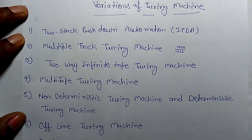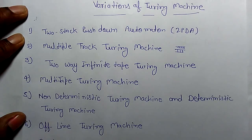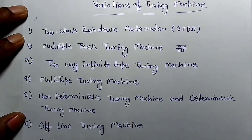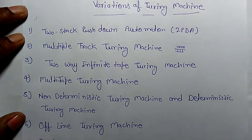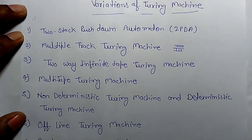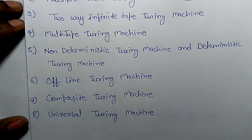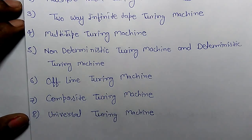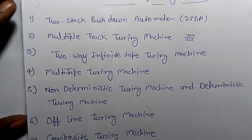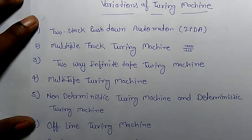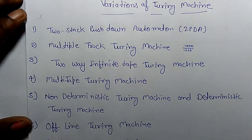Other variations include the multiple-tape Turing machine, non-deterministic Turing machine, deterministic Turing machine, offline Turing machine, composite Turing machine, and universal Turing machine. So these are the variations of Turing machines.